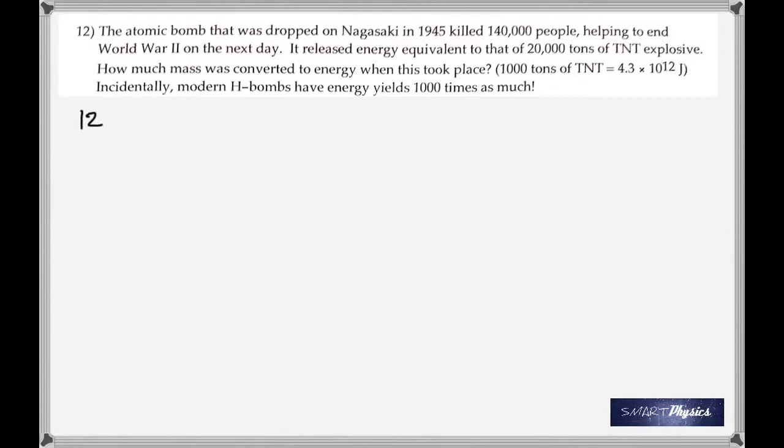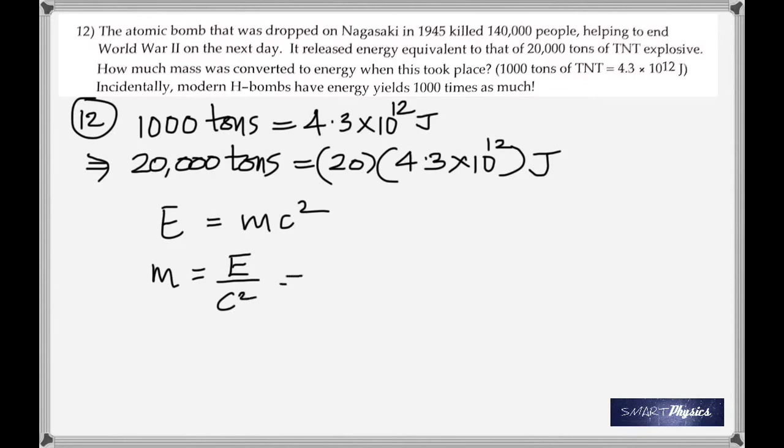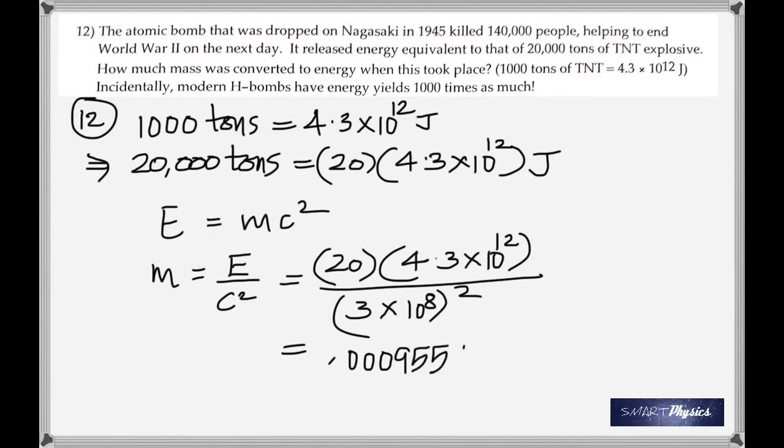Number 12, it just tells you that 1,000 tons of TNT will produce 4.3 times 10 to the 12 joules, and 20,000 tons of TNT explosive energy was produced. So 20 multiplied by that, that's an actual fact about the atomic bomb that was dropped on Nagasaki. And it killed 140,000 people. So the mass is just that energy divided by the square of the speed of light. And you get the mass as 0.955...